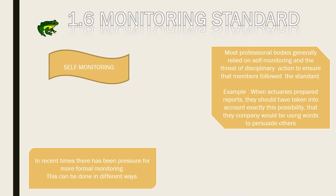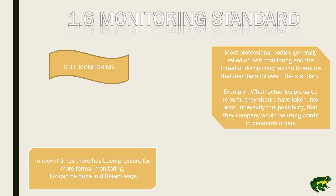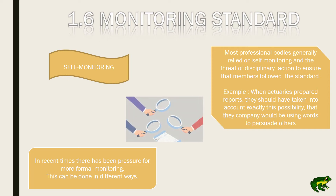1.6 Monitoring Standard: Self-Monitoring. Most professional bodies generally relied on self-monitoring and the threat of disciplinary action to ensure that members follow the standard. For example, when actuaries prepare reports, they should have taken into account this possibility — that the company would be using words to persuade others. In recent times there has been pressure for more formal monitoring, and this can be done in different ways.